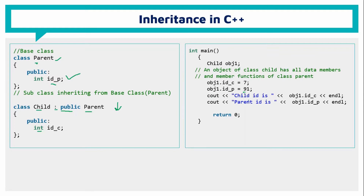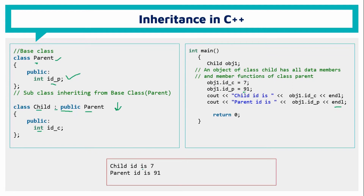We print the child ID using object1.IDC, then print a new line. Then we print the parent ID using object1.IDP. When we run the output, the child ID is 7 — that is, object1.IDC is 7 — and the parent ID is 91 — that is, object1.IDP is 91.